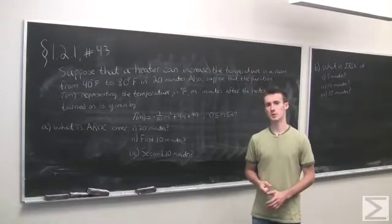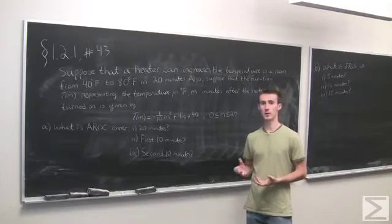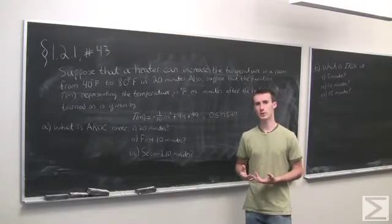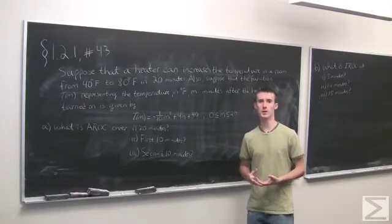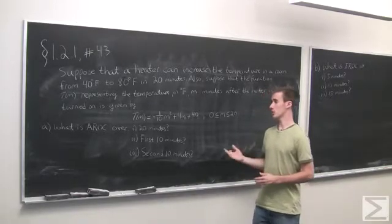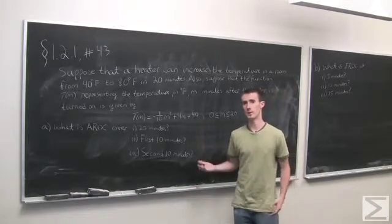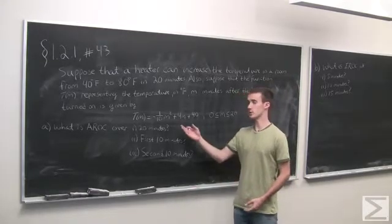In problem number 43 of section 1.2.1, we're given a situation where a heater is in a cold room. This heater can heat the room from 40°F to 80°F in 20 minutes. Also, the temperature in the room m minutes after the heater is turned on is given by this equation here.